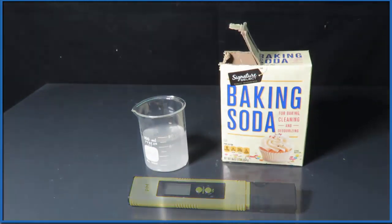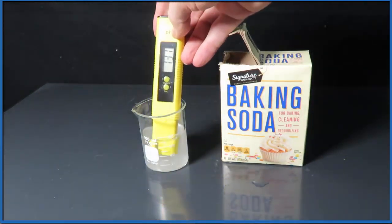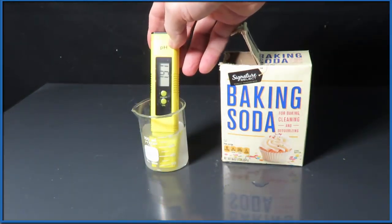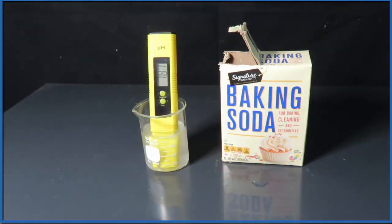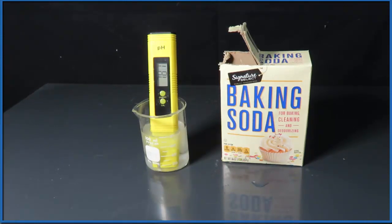So we put the pH meter in and it reads 7.89, 7.88. Let it equilibrate a little bit and the pH is right about what we expected, between 7 and 8, closer to 8. So the pH of baking soda according to our pH meter is right about 7.8.